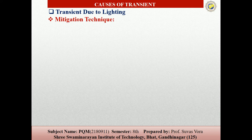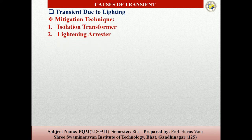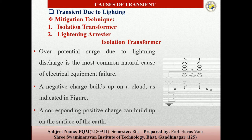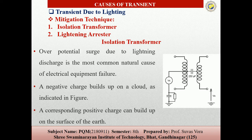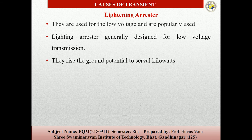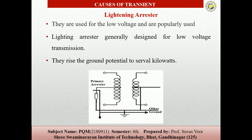Due to lightning, the mitigation techniques are isolation transformers and lightning arrestors. We can put capacitors between the primary and secondary side windings, and for lightning arrestors, we can directly ground the system.